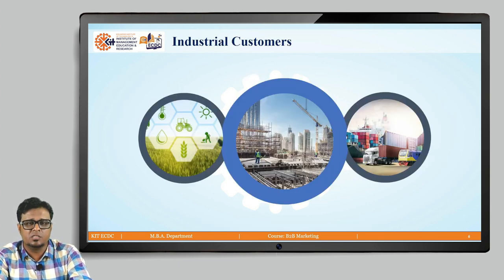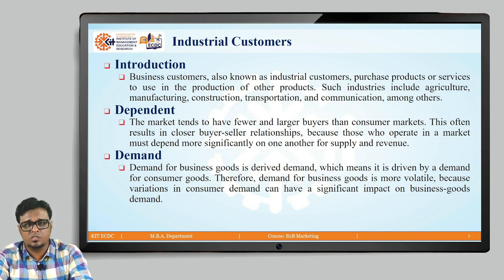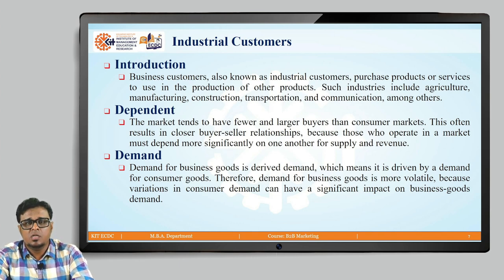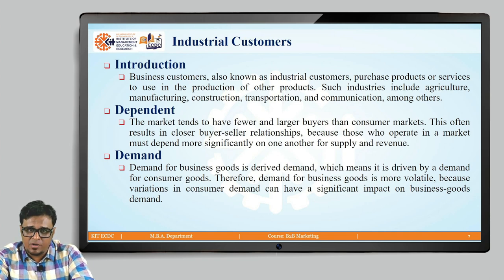Let us move to industrial customers. Business or industrial customers purchase products or services to use in the production of other products. Industries in this category include agriculture, manufacturing, construction, transportation and logistics, and communication, among others. This market tends to have fewer but larger buyers, which often results in closer buyer-seller relationships, since those who operate in this market must depend more significantly on one another for supply and revenue. Demand for business goods is derived demand, meaning it is driven by demand for consumer goods.